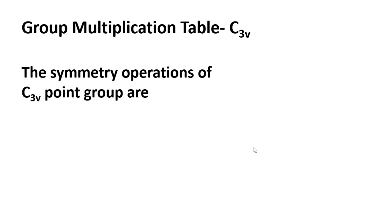Now let us discuss the group multiplication table for C3V. The example for the C3V point group is the ammonia molecule. The symmetry operations of C3V point group are E, C3, C3 square, sigma V, sigma V dash, and sigma V double dash.